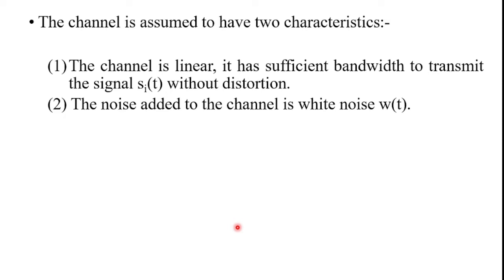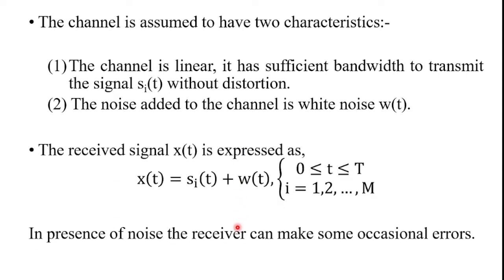From the equivalent model of the AWGN channel, the received signal x(t) is given by: x(t) = si(t) + w(t), where si(t) is the transmitted signal and w(t) is the noise signal. This holds for t from 0 to capital T and i equal to 1 to capital M.